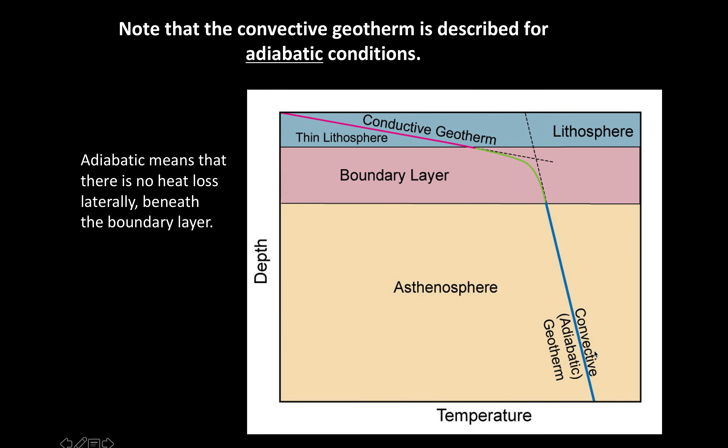Notice that the convective geotherm in the asthenosphere is described as being adiabatic. Adiabatic means that there is no heat loss laterally. The asthenosphere is assumed to have basically an equal heat capacity on either side of the asthenosphere that we're looking at.